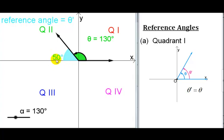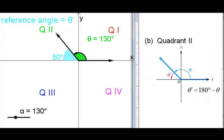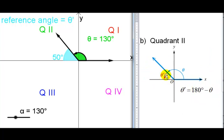So where did this 50 degrees come from? If I go all the way out to the negative x-axis I've gone 180 degrees, so to get the reference angle I do 180 minus my actual angle. In quadrant 2 the reference angle is 180 degrees minus the actual angle.